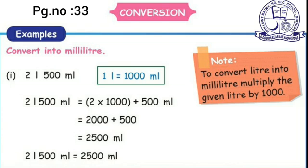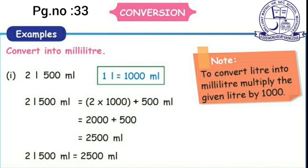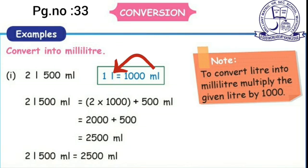Liter is the bigger unit and milliliter is the smaller unit. To convert bigger unit to smaller unit, multiply by 1000. To convert milliliter to liter, since you are going from smaller unit to bigger unit, divide by 1000.